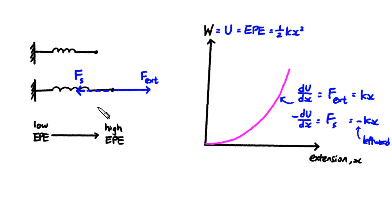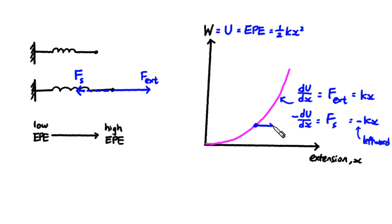Likewise, on the graph, if you are currently at a given point, then to increase the EPE you have to move rightward where the EPE is higher. So the external force is rightward. And the spring force has got to be leftward, because it is trying to pull you to the left side where the EPE is lower.